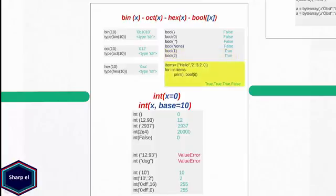In my short example I have created a list named items. In my for loop I am passing each element from the list to the bool function. As you can see in the output, bool returns either boolean true or false according to the argument value.